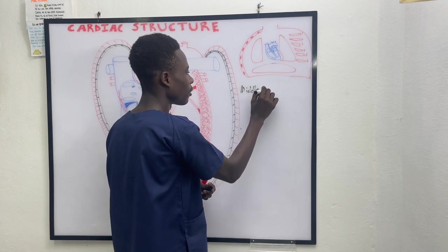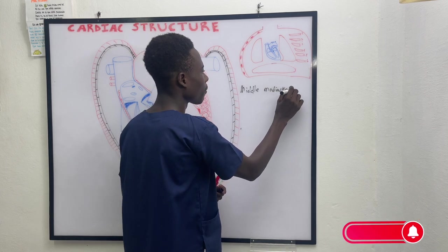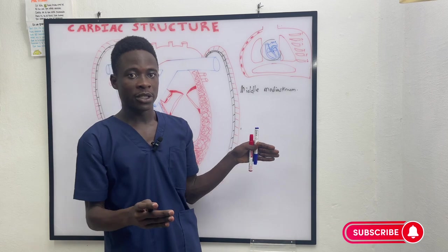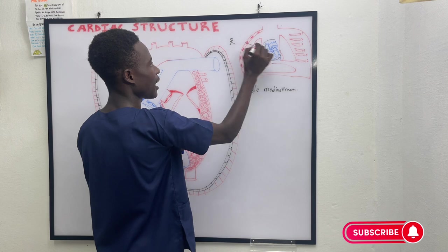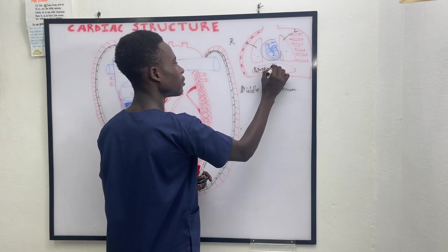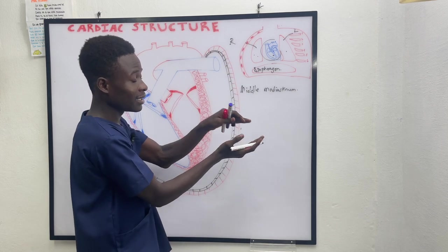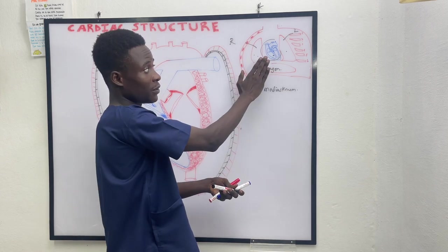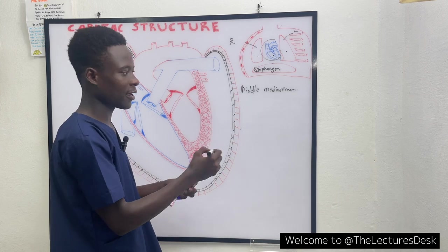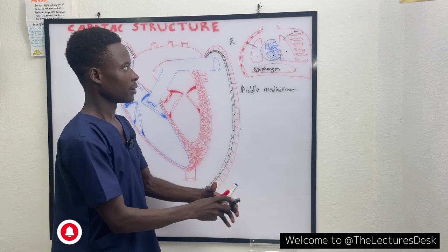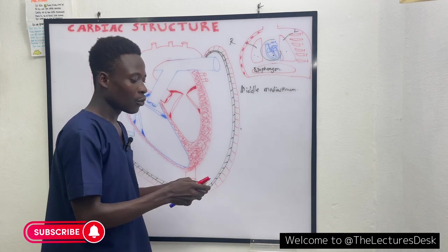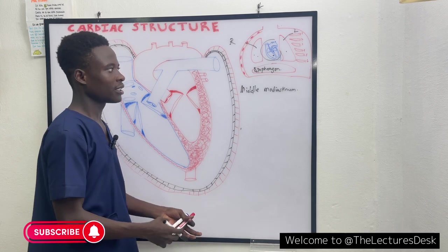At the middle mediastinum, the heart is found between the two lungs — the right and the left lung. The heart is lying on top of the diaphragm. At the anterior part we find the sternum, that is the breastbone, and at the posterior part we find the esophagus and then the trachea. All these — the lungs, the diaphragm, the sternum, the esophagus, and the trachea — come together to form the anatomical relationship of the heart.